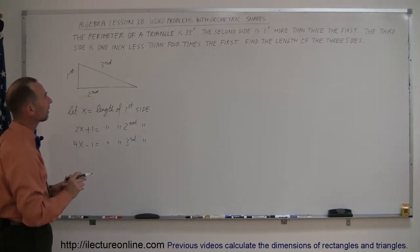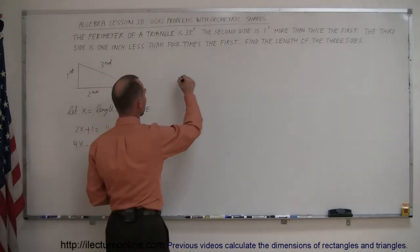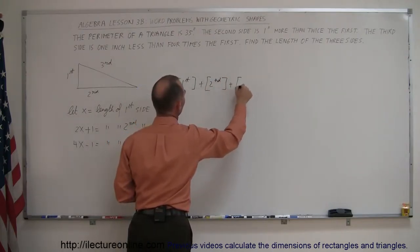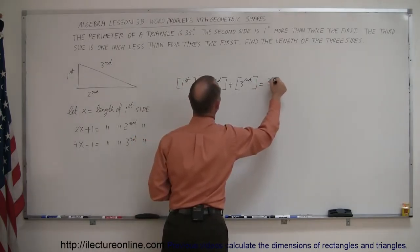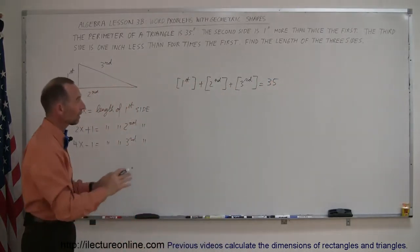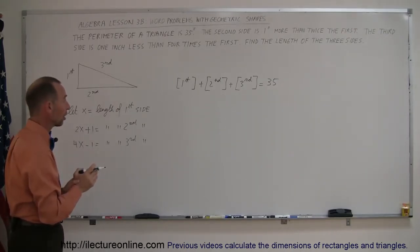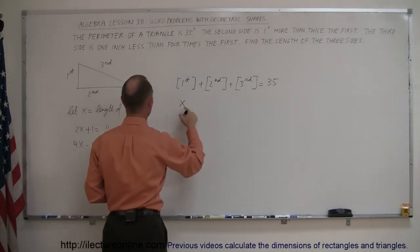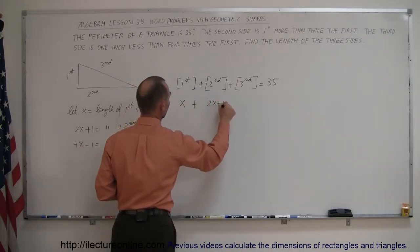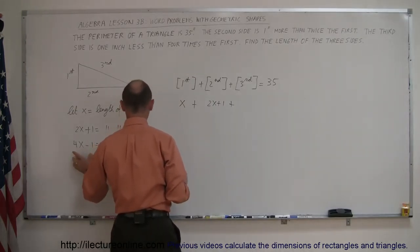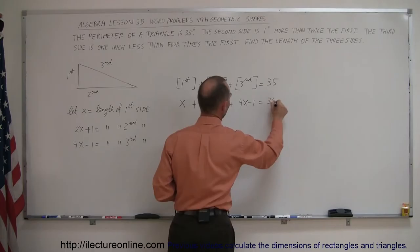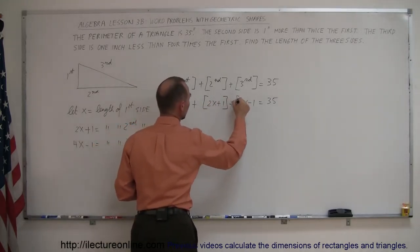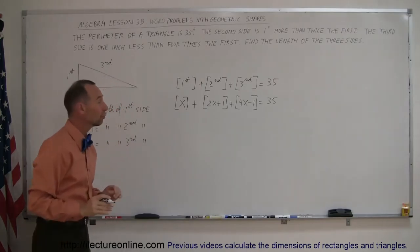Now we can go ahead and solve the problem. The perimeter is 35 inches, meaning the length of the first side plus the length of the second side plus the length of the third side equals 35. We plug in each side in terms of x: x plus 2x plus 1 plus 4x minus 1 equals 35.